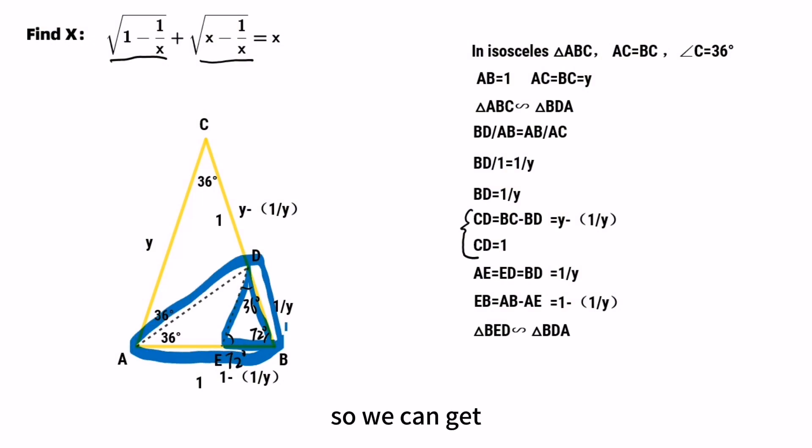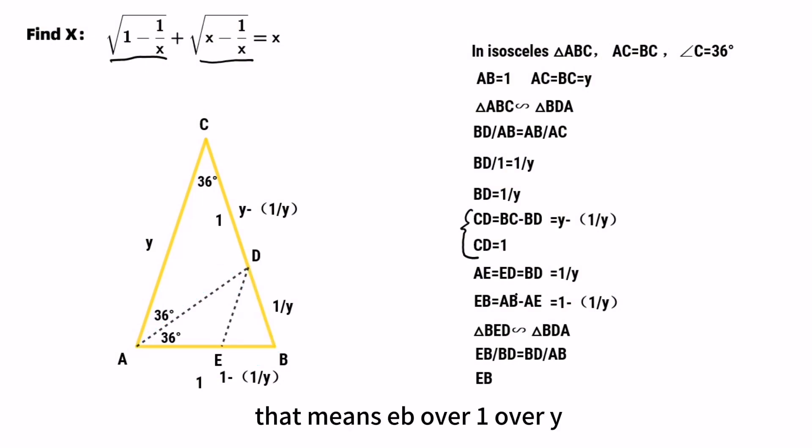So we can get another equation for EB. EB over BD equals BD over AB. That means EB over 1 over Y equals 1 over Y over 1. So EB equals 1 over Y squared.